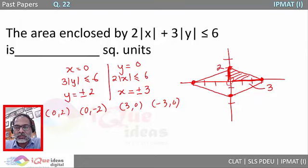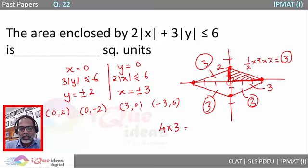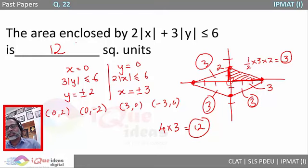So the area of each individual triangle is half into base into height, which is equal to 3 square units. So by that I get 4 triangles each with an area of 3 square units. So 4 multiplied by 3, the total area would be 12 square units.